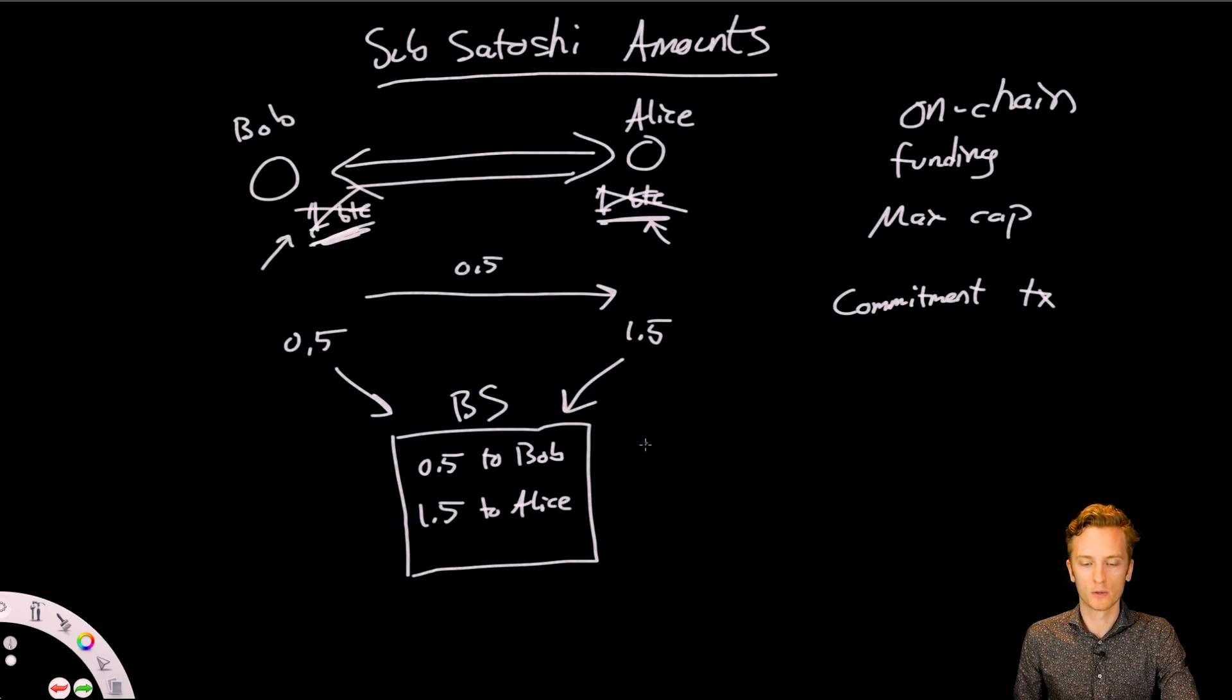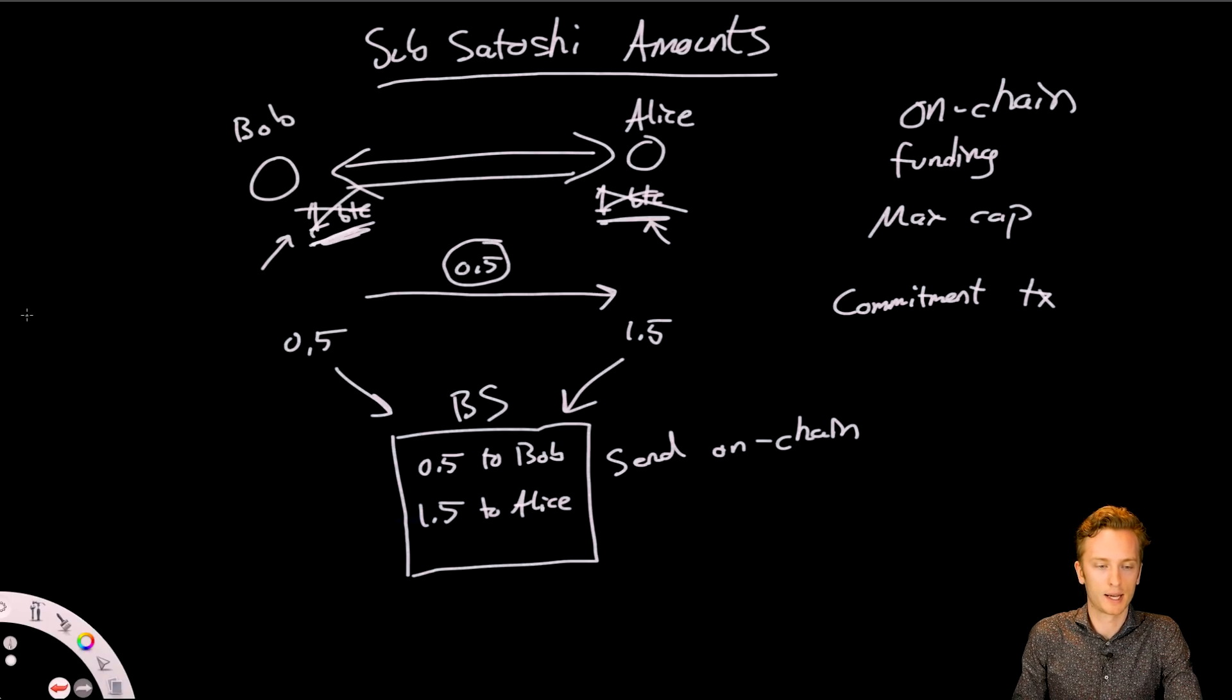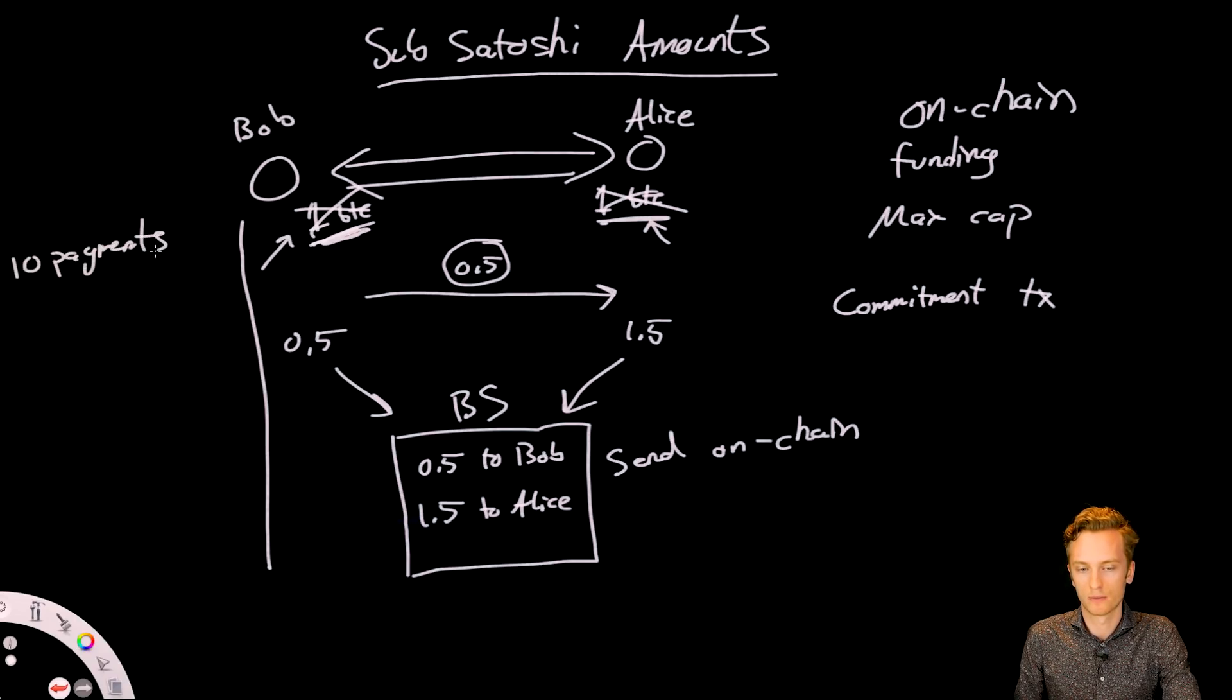And when you close this channel, then you can't, of course, have transactions that are less than one Satoshi, whereas the Bitcoin blockchain can't handle that. But in the Lightning Network, there's no such limitation. So we could have, instead of this 0.5 Bitcoin transaction right here, what if we instead had 10 payments, so we have 10 Lightning payments of 0.1 Satoshi? Because that actually works in Lightning. You can make one payment of 0.1 Satoshi because the Lightning Network supports that.